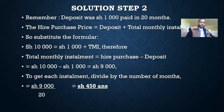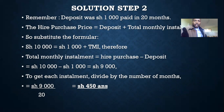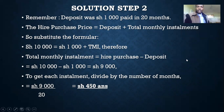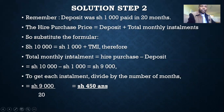Remember, in the question we were told she paid a deposit of 1,000 and this was paid in 20 months. We know that the hire purchase price is given by the formula: deposit plus total monthly installments. Right now we have the hire purchase price and we have the deposit, but we don't have the total monthly installments. What we have from the monthly installments is the number of months.